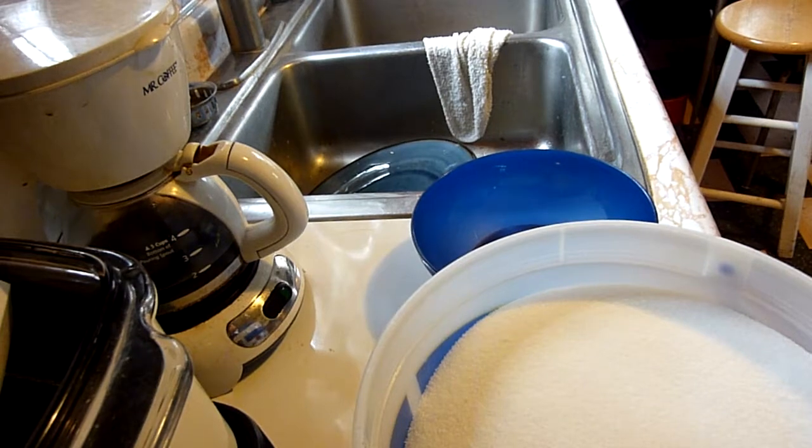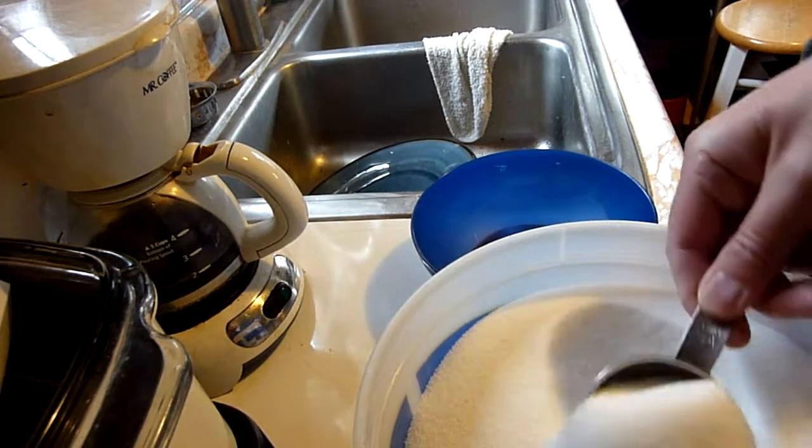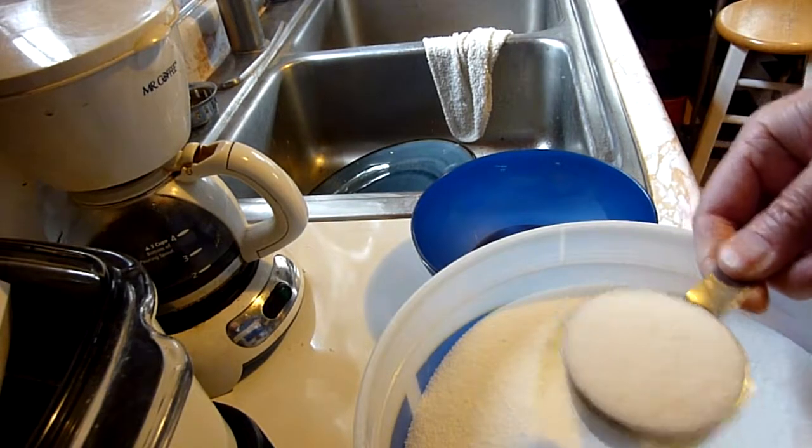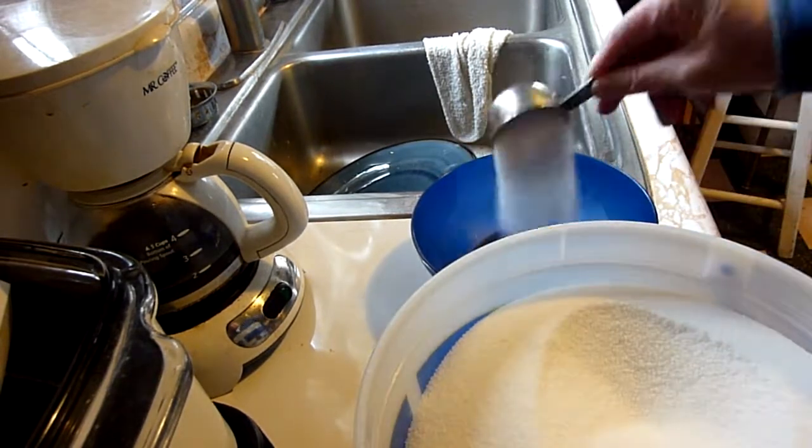Hi folks, I'd like to show you how to make hummingbird nectar for your feeder. We've got pure cane sugar and we take one quarter cup, put it in a bowl.